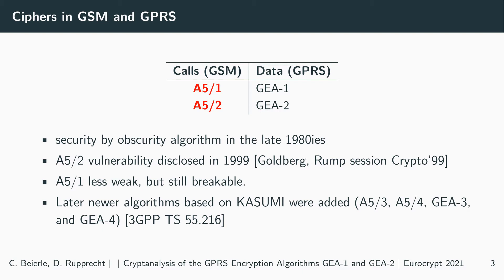Initially, 2G had four encryption algorithms: two for voice and text messages and two for data transmissions. All algorithms have a 64-bit input key. Those algorithms were designed in the early 80s and 90s with the principle of security by obscurity.